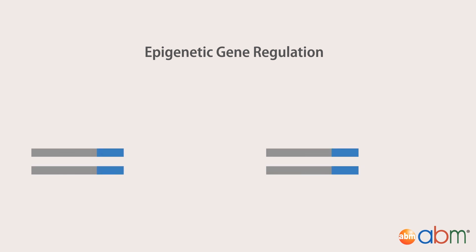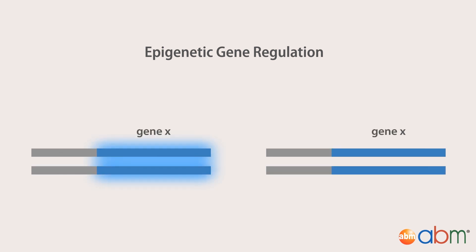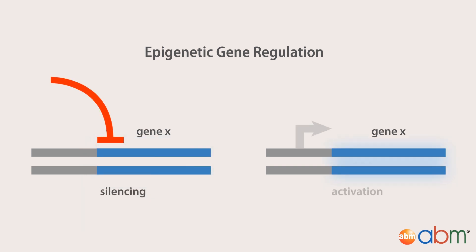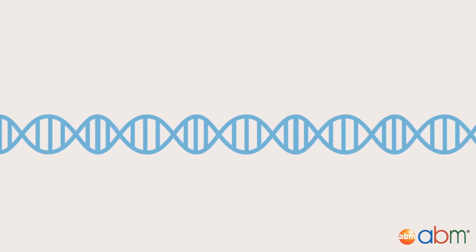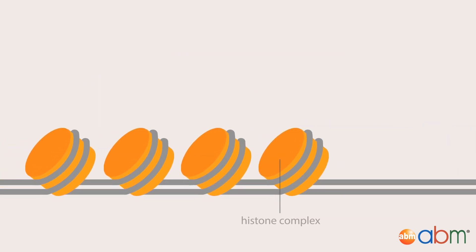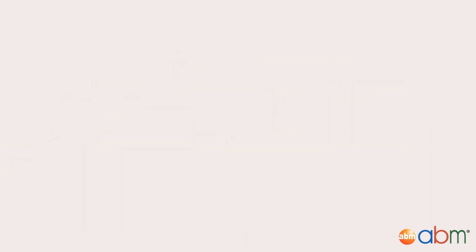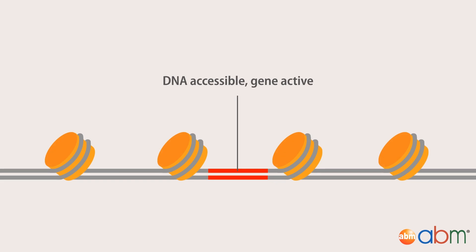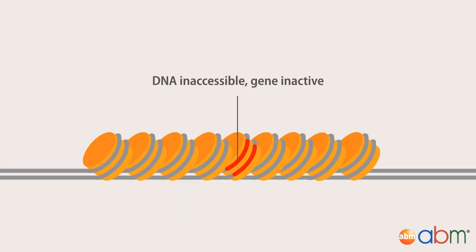Epigenetic gene regulation is an elegant series of chemical modifications that results in the selective silencing or activation of particular genes without direct alteration of the DNA primary sequence. DNA methylation, as well as histone tail modifications such as methylation or acetylation, regulate whether a particular genomic sequence is stretched out and accessible to the transcriptional machinery, or whether it gets tightly bundled into transcriptionally silent heterochromatin.